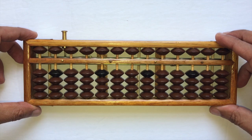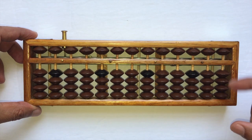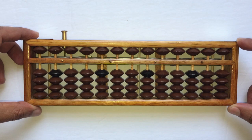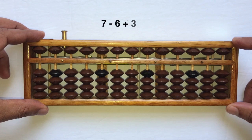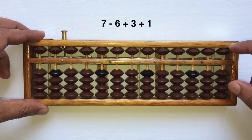Let's learn how to add one when we don't have enough beads in a column by using one's little friend. Okay, so let's do that with an example. Let's start with seven minus six plus three plus one.